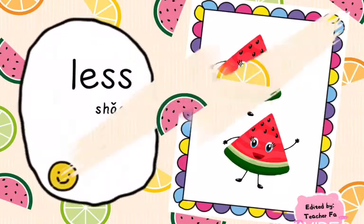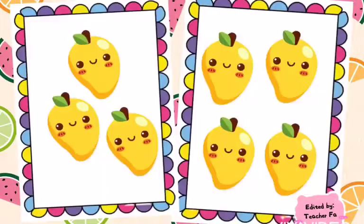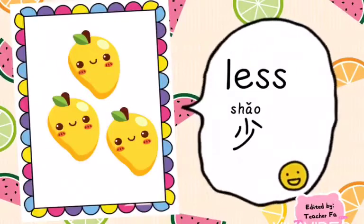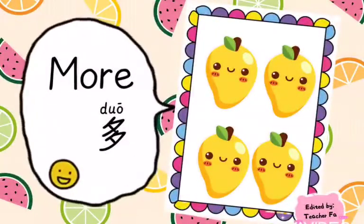While this photo has less watermelon. 笑. Now, let's see the next example. Children, can you tell me which photo has less mangoes? Well done! Now, you understand. And this photo has more mangoes.